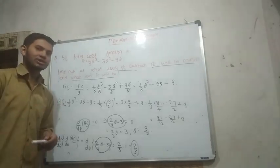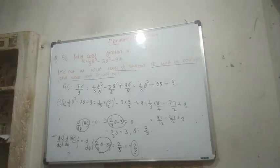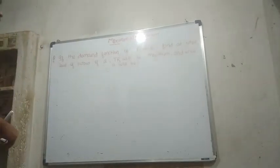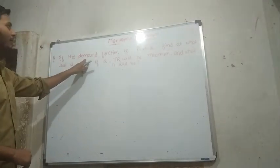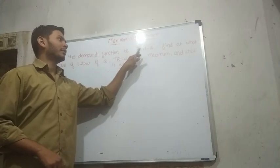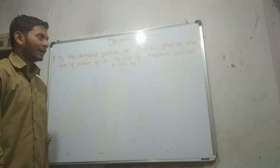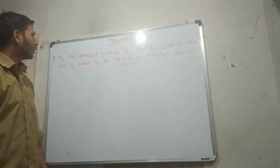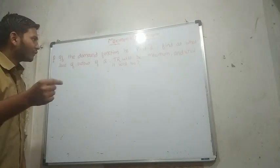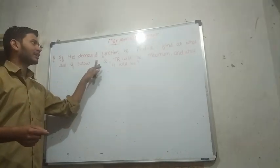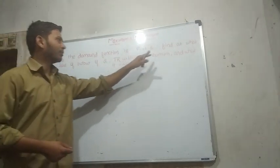Now let's move on to the next question — we will solve some new questions. The next question is: if the demand function is P equals root under (9 minus Q), find at what level of output total revenue TR will be maximum.